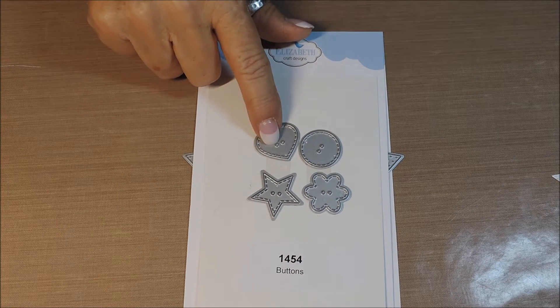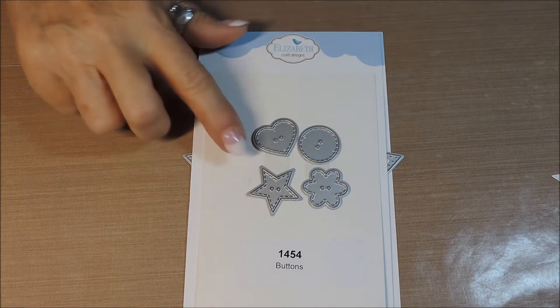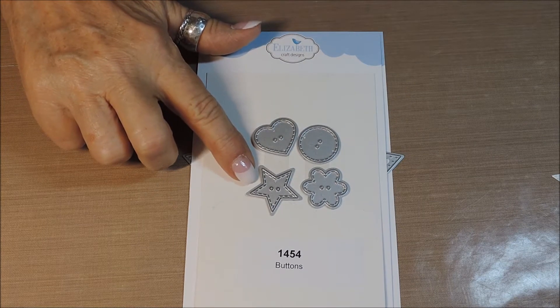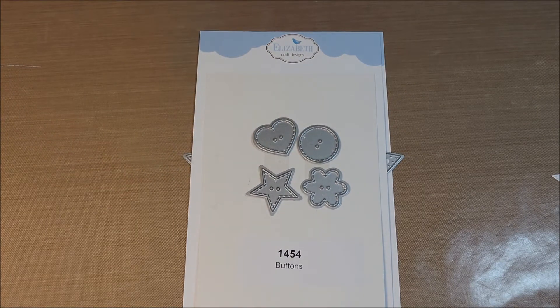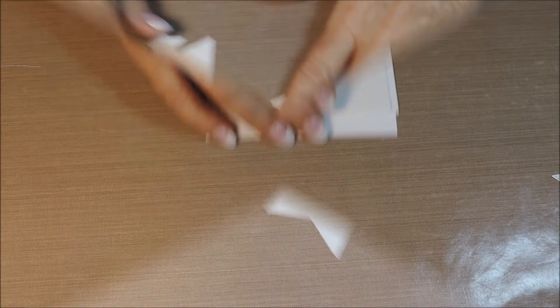This set has a heart, a regular button, this cute little flower, and a star button which we're going to use today. Each button has two holes in the center so that thread or twine can be easily added for a decorative touch.